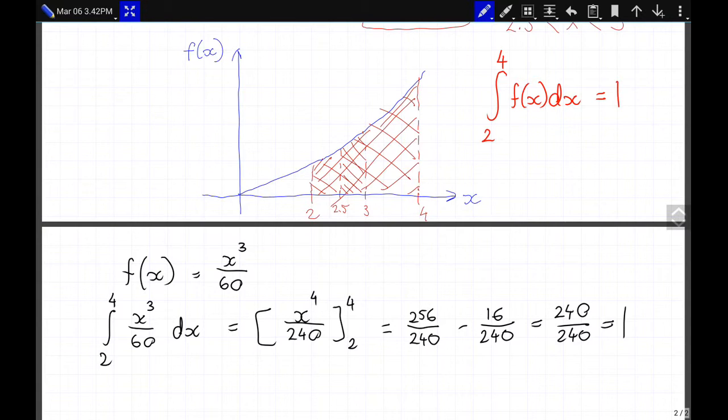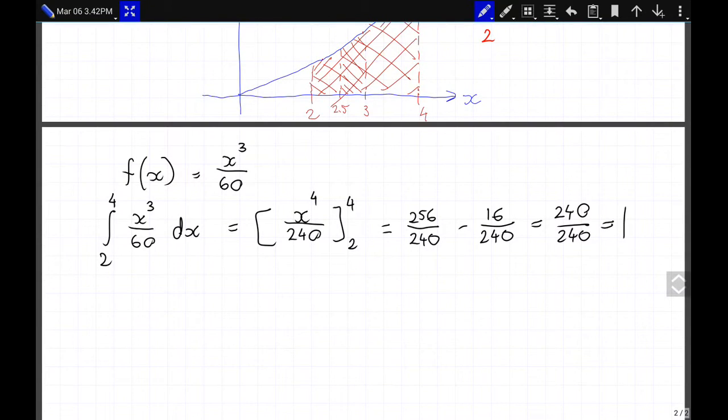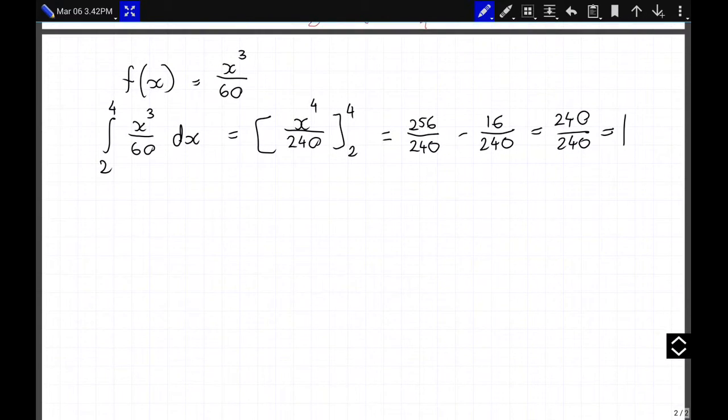So it is indeed a PDF. Now we want to find the expected value of a random variable. So if you think of a discrete random variable, we had that our pmf was the sum over k pk and the expected value was the sum over k, k times pk.